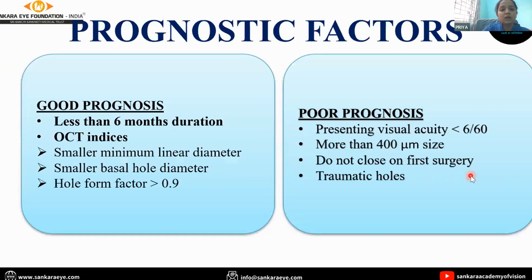Good prognostic factors include less than six months duration of macular hole, and OCT indices such as smaller minimum linear diameter, smaller basal hole diameter, and hole form factor of more than 0.9. Poor prognostic factors include presenting visual acuity of less than 6/60, holes greater than 400 micrometers that do not close on first surgery, and traumatic holes.